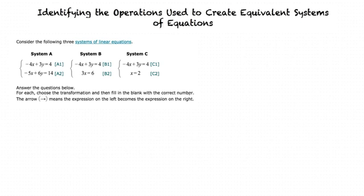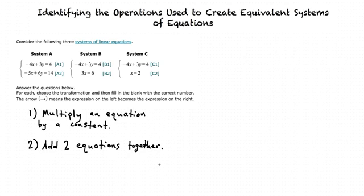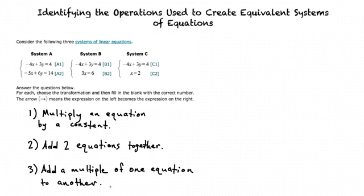In this question, we are asked how to transform one system of equations into another. What can we do to transform one system of equations into an equivalent system of equations? There are three operations we can do to transform a system into another. Our first option is multiply an equation by a constant. Our second option is add two equations together. And our third option is add a multiple of one equation to another.